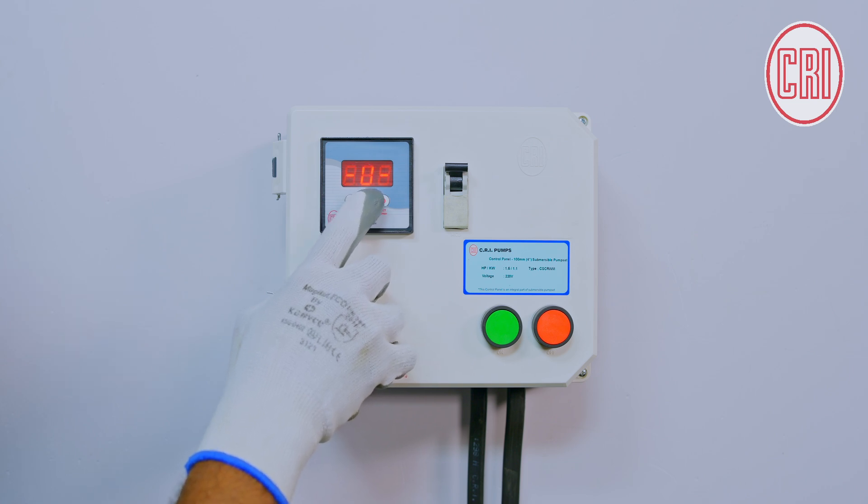the display will show that it is in Timer mode. Also, the 1 minute timer, CRI logo, the voltage at which the motor was running, Current will read 8.2 Amps. The pump status will show as Pump On.